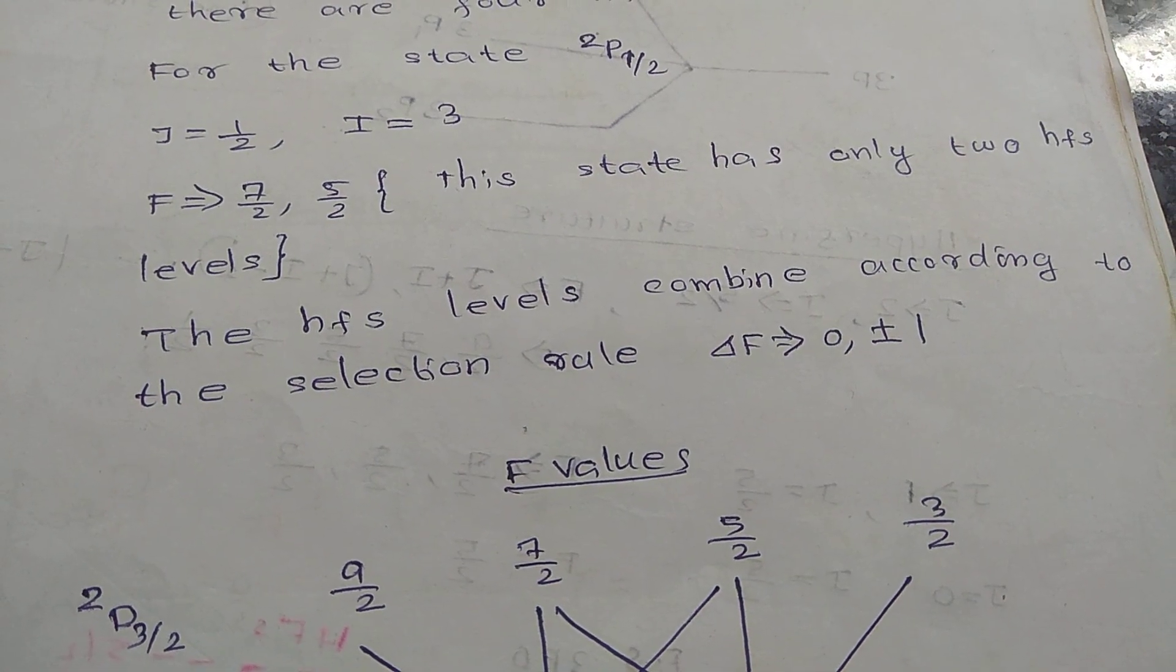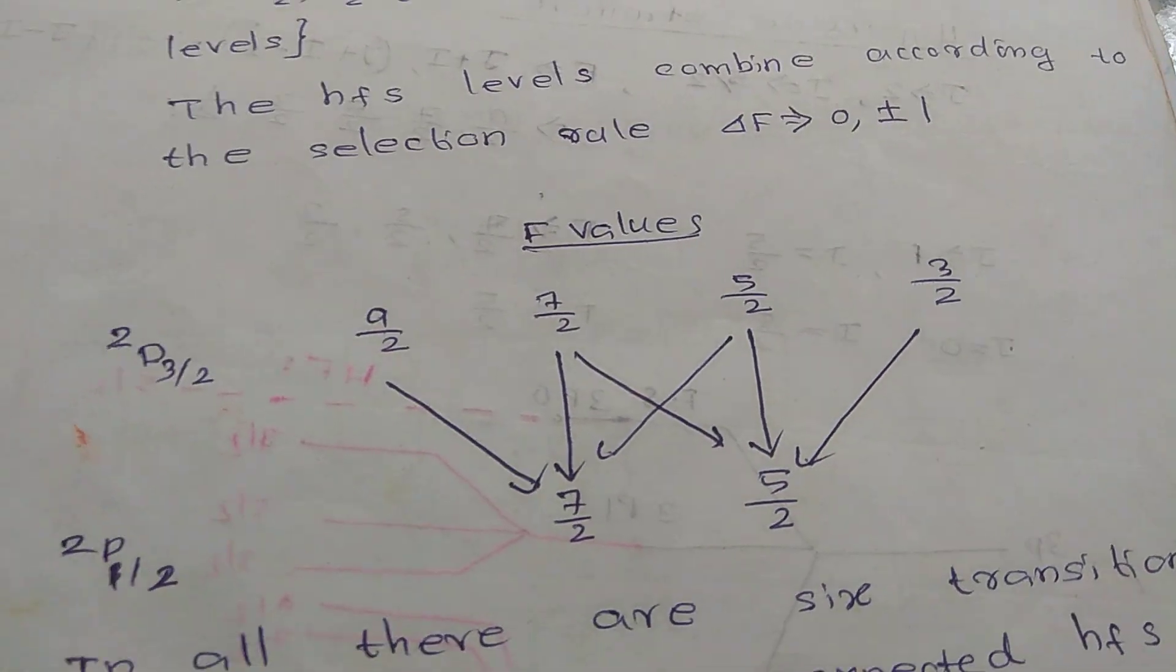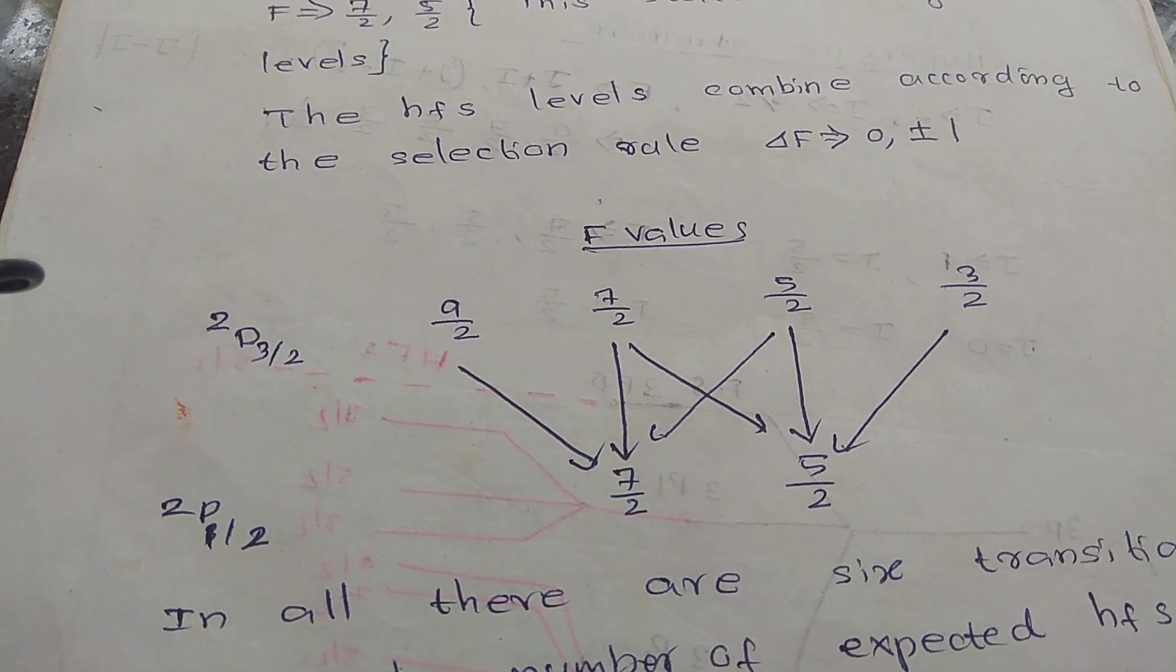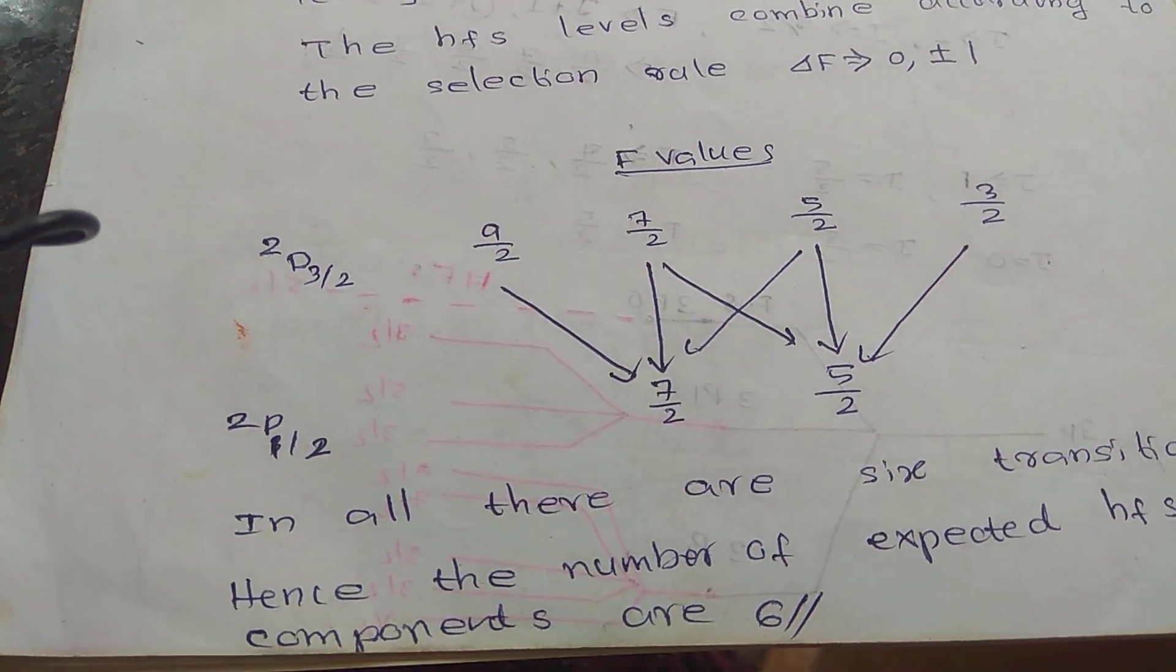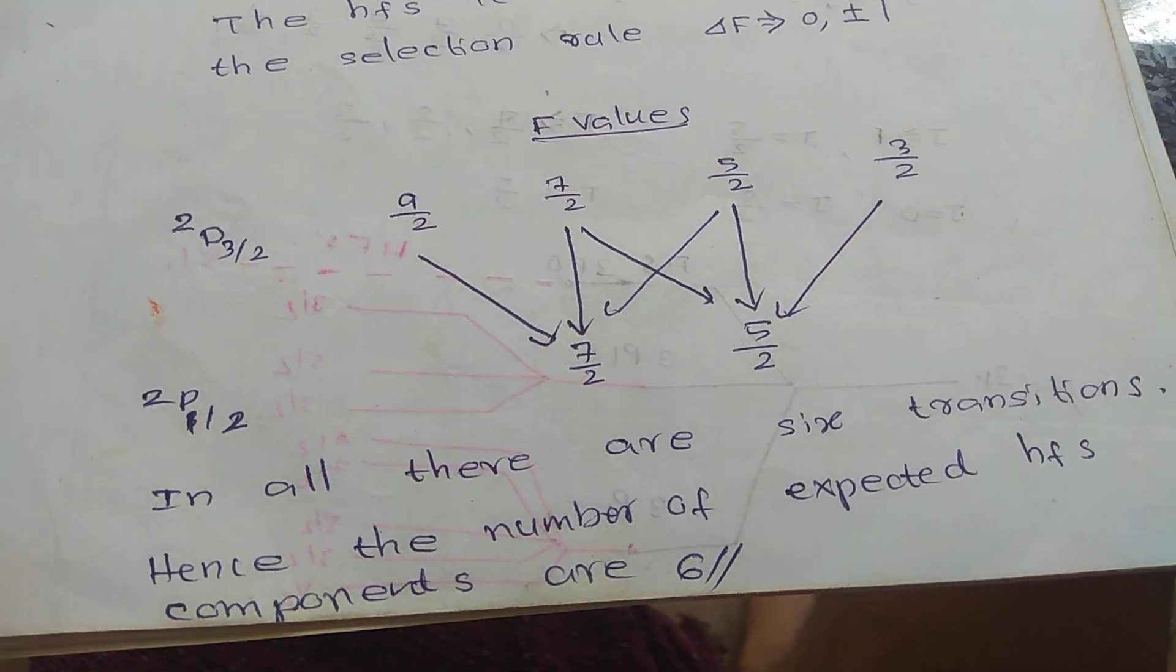The hyperfine levels combine according to the selection rule ΔF equals 0, plus or minus 1. We can write it in the form of D₃/₂: 9/2, 7/2, 5/2, 3/2, and P₁/₂: 7/2, 5/2. So we get the combinations.